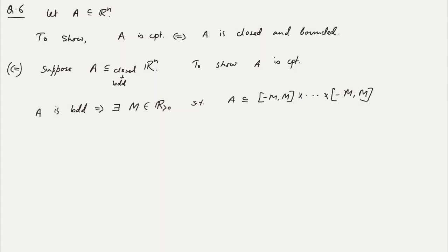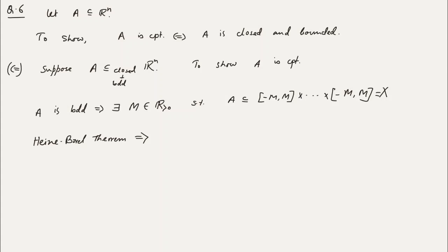A is bounded implies there exists some M, a positive real number, such that A is a subset of the n-fold product of the closed interval [−M, M]. That is, A ⊆ [−M, M] × [−M, M] × ⋯ × [−M, M] (n times). By the Heine-Borel theorem, let X denote this n-fold product of [−M, M]. Heine-Borel implies X is compact.